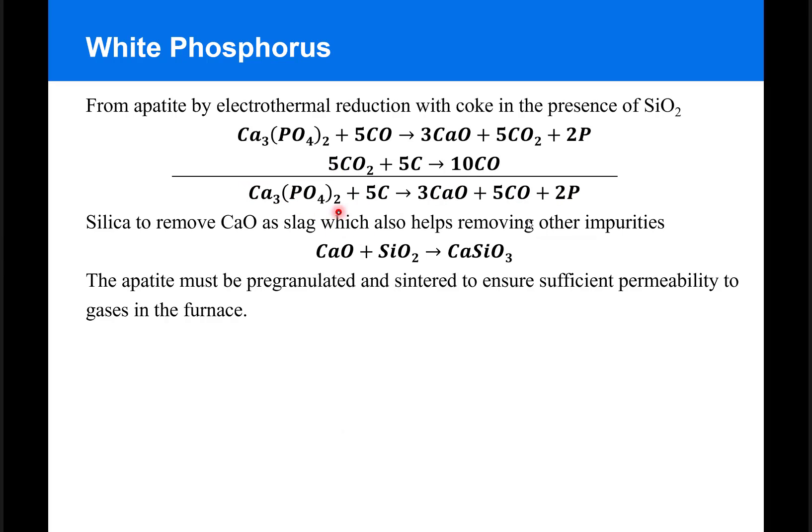The overall equation that describes the process is summarized over here. Silica is added to remove the calcium oxide as slag, which also helps to remove other impurities from the reaction.